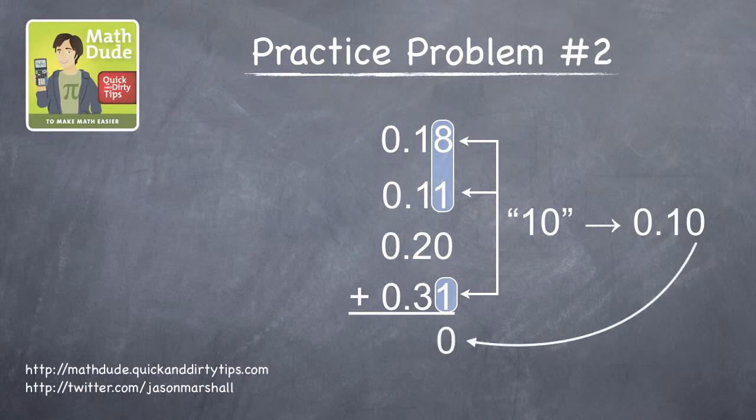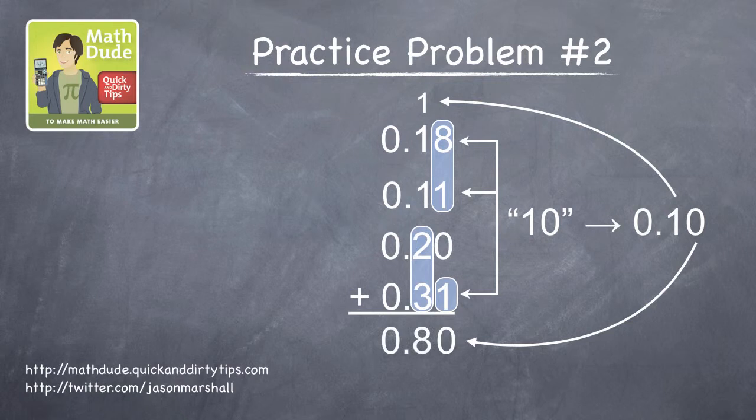Okay, let's write the 0 below, carry the 1 up top, and then add the numbers in the tenths column. 3 and 2 is 5, plus 3 more is 8, which is eight-tenths. And that's the final answer.